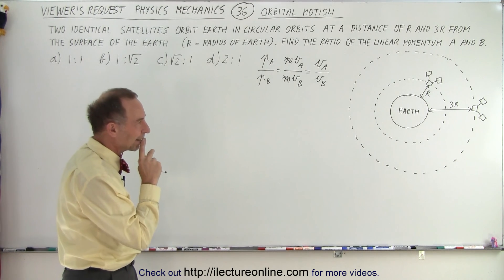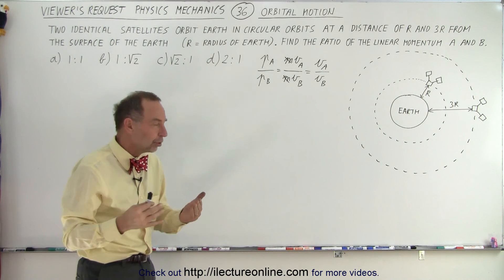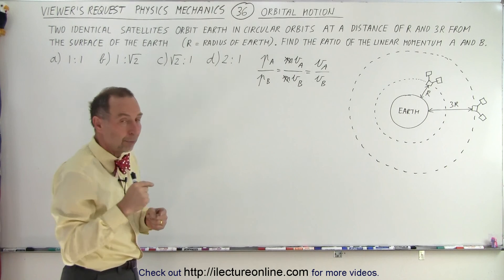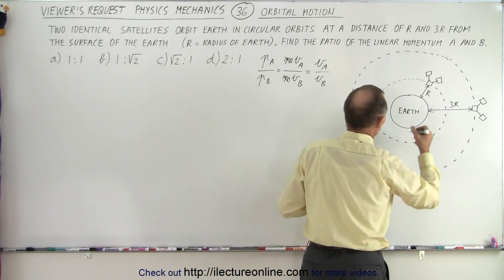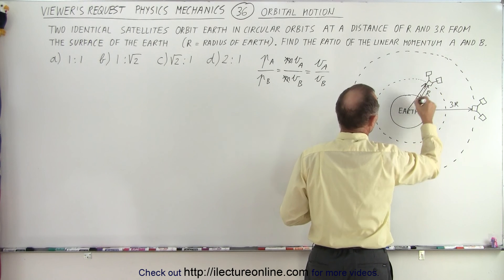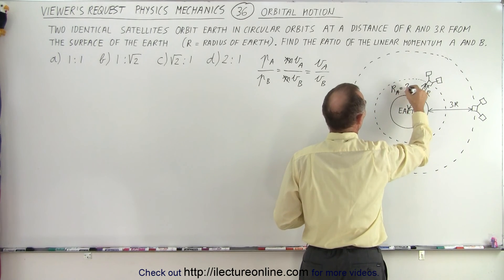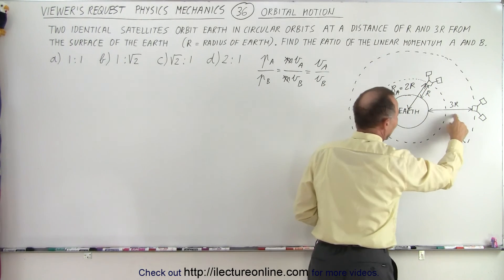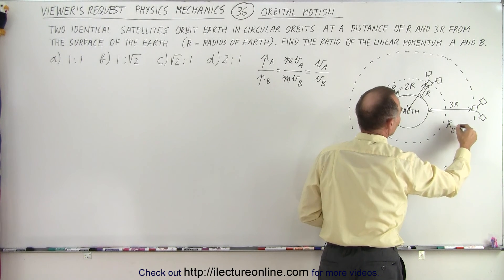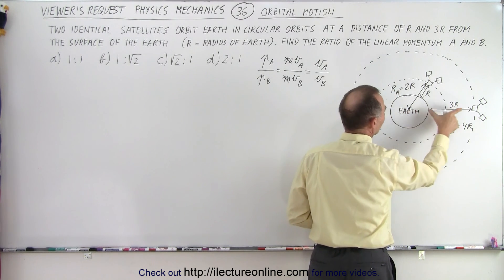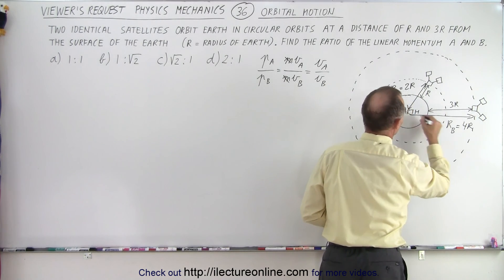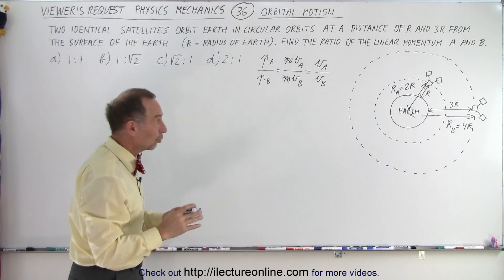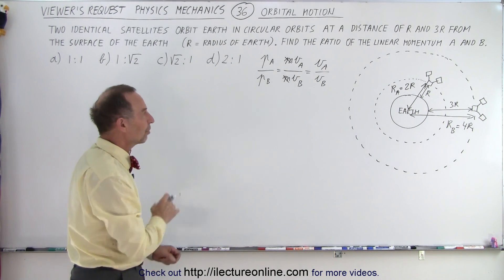The second thing we have to realize is that when we talk about orbital motion, the radius of the orbit is not the distance from the satellite to the surface of the Earth, but the distance to the center of the Earth. So RA is really twice the radius of the Earth — the height above the surface plus the radius of the Earth — and the radius of satellite B is equal to 4R: the radius of the Earth plus the 3R height above the surface. Those are the actual radii of the orbits of the two satellites.